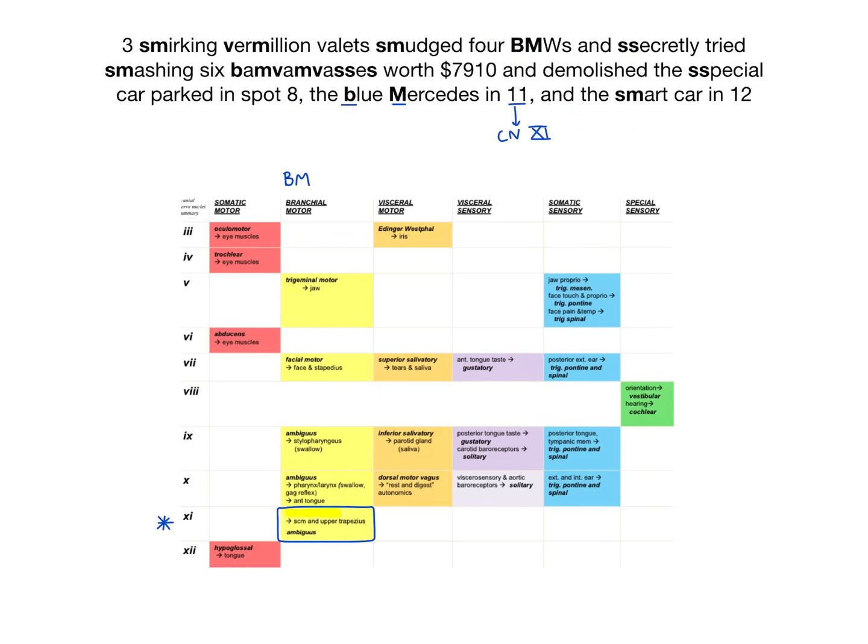Lastly, the smart car in spot 12 represents the somatic motor of the hypoglossal nucleus, cranial nerve 12. That wraps up this tutorial on the cranial nerve nuclei modalities. I hope this helped you out as much as it helped me — best of luck!